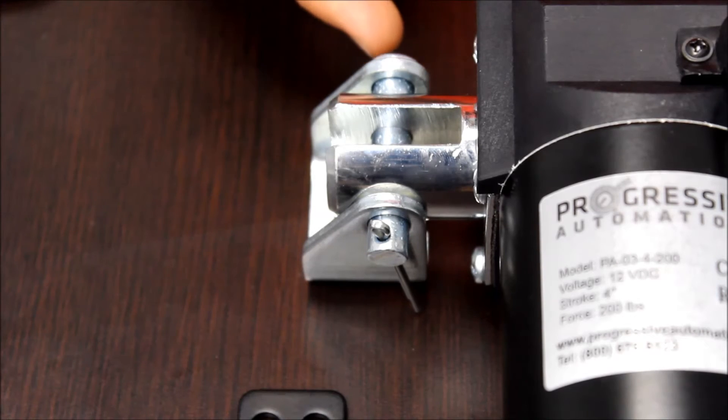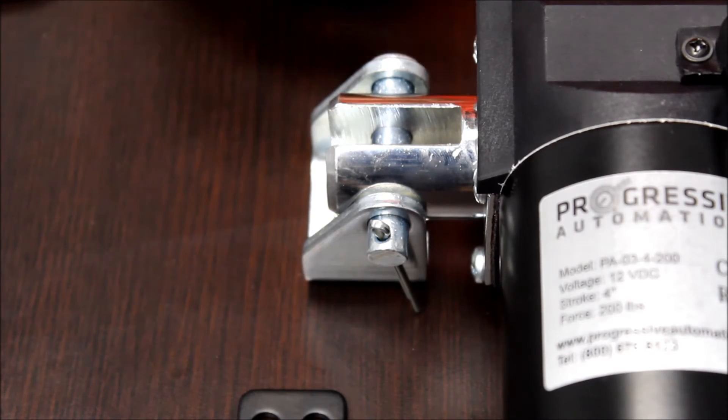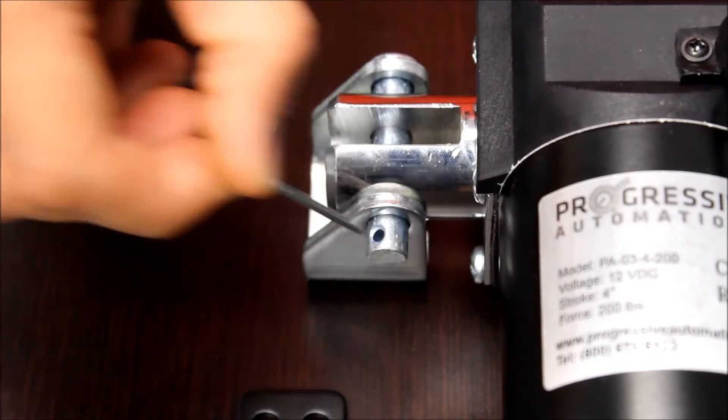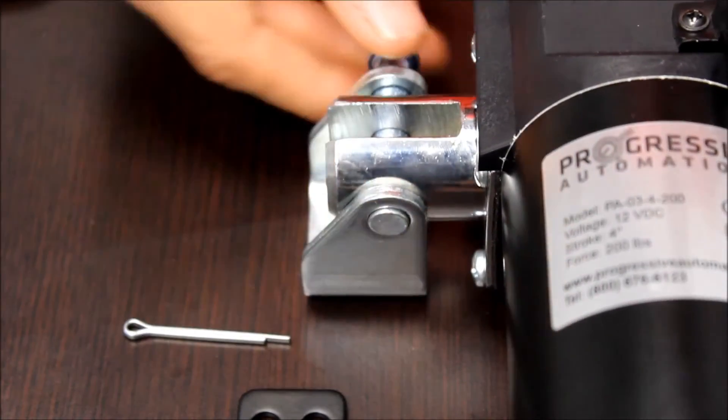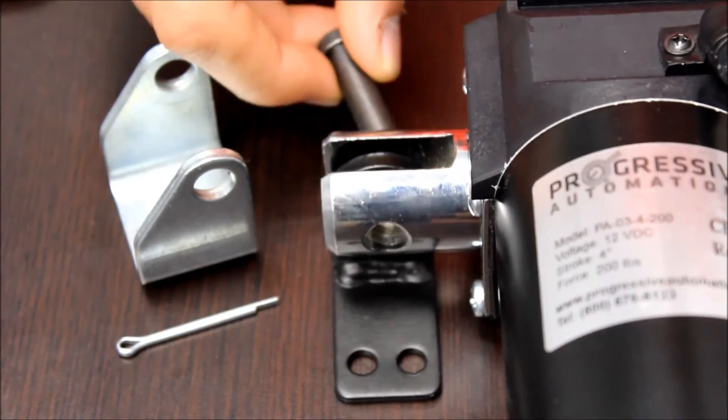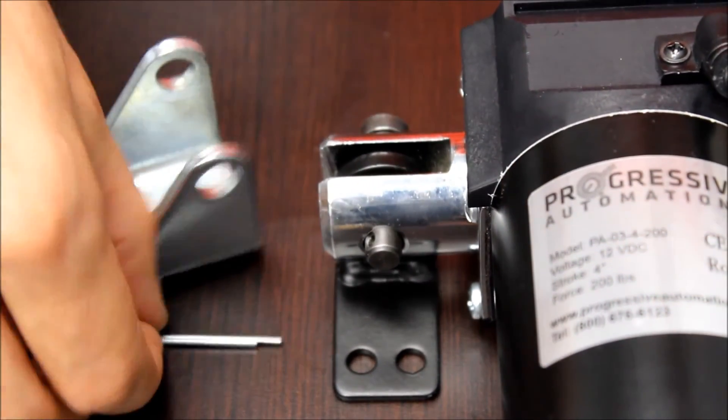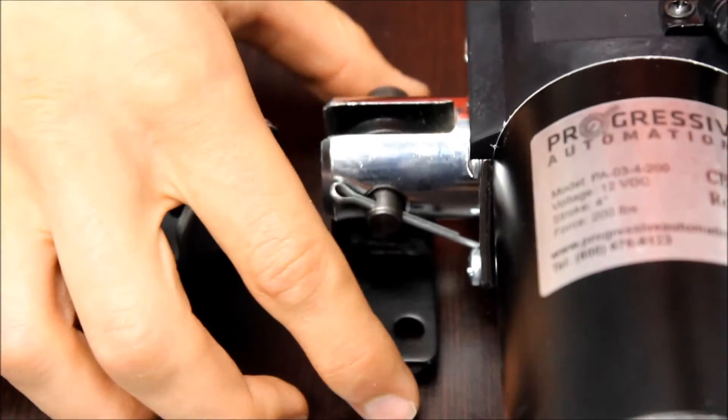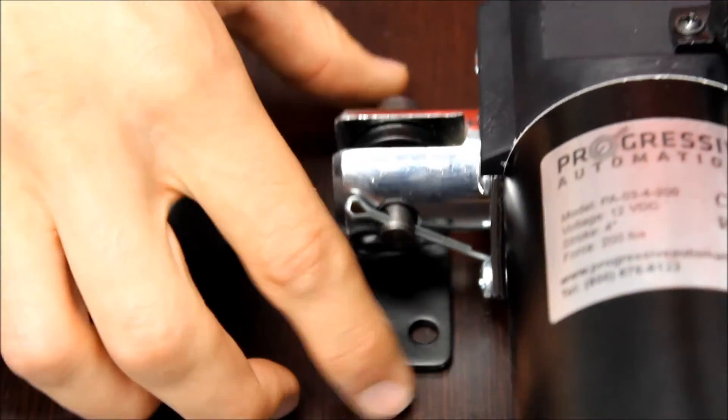Our mounting bracket, BRK-02, can be used on both sides of the actuator. On the motor side of the actuator, it can be swapped out for our BRK-01. By using these mounting brackets, the actuators can be mounted over 180 degrees, allowing for more versatile setups.